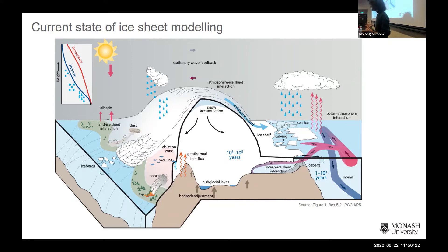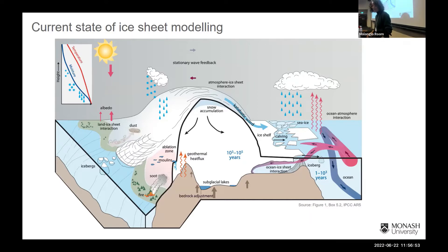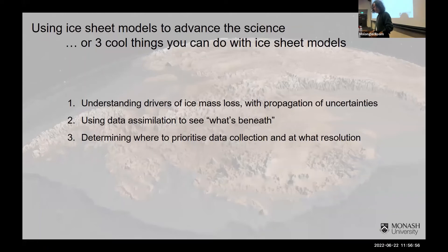Different models represent these different physical processes to varying degrees. Things like basal friction — what's actually happening where the ice meets the bed and how we parameterise that — is really critical to how rapidly the ice flows. Calving is typically represented pretty poorly, if at all, in ice sheet models, and we know different ice shelves respond in different ways and have different calving laws. I'll talk through some case studies — some examples of what we've been doing recently with ice sheet models.